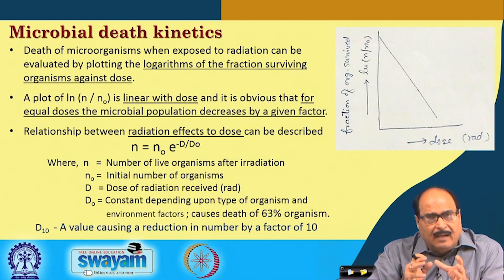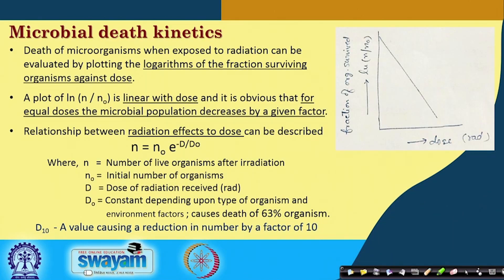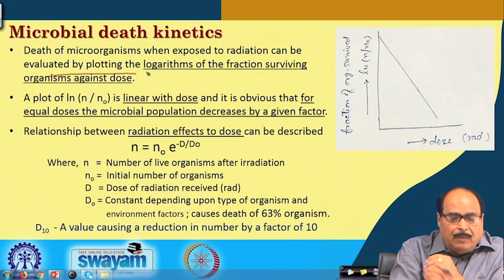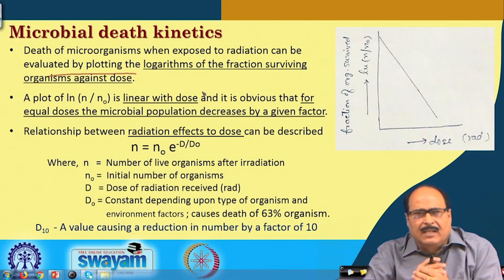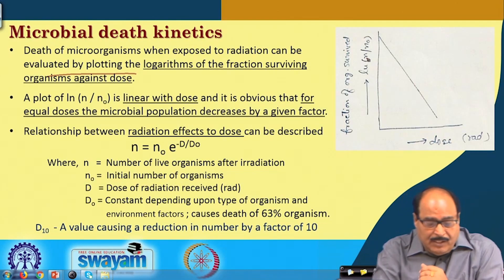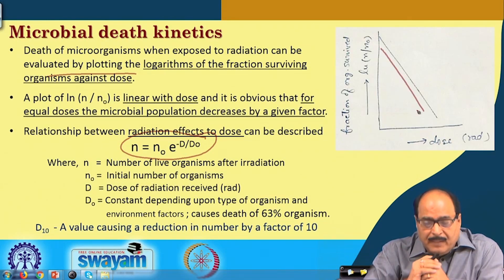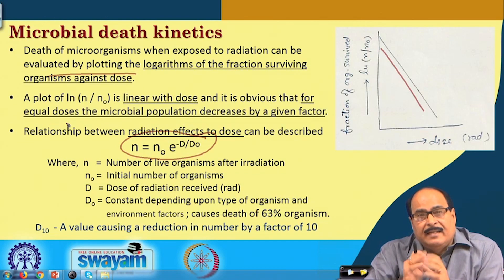Regarding food characteristics, if the process is based on destruction of microorganisms, the microbial death kinetics must be considered. The death of microorganisms when exposed to radiation can be evaluated by plotting the logarithm of the fraction of surviving organisms against dose — similar to what is done in thermal processing. As seen in this plot, ln(N/N₀) plotted against dose in rad gives a linear relationship, meaning that for equal doses, the microbial population is decreased by a given factor.